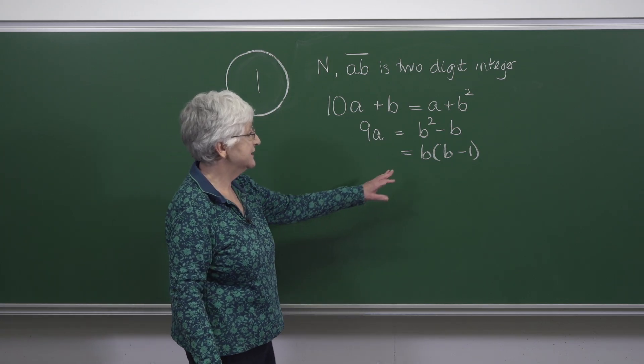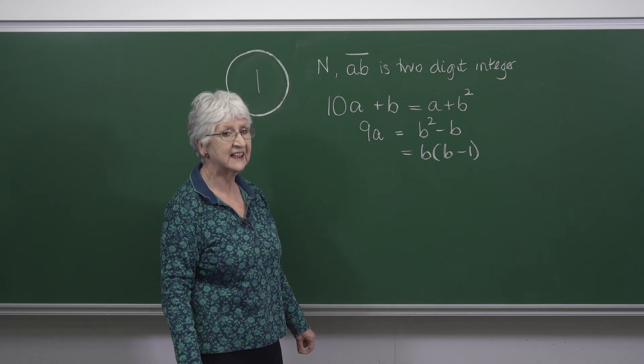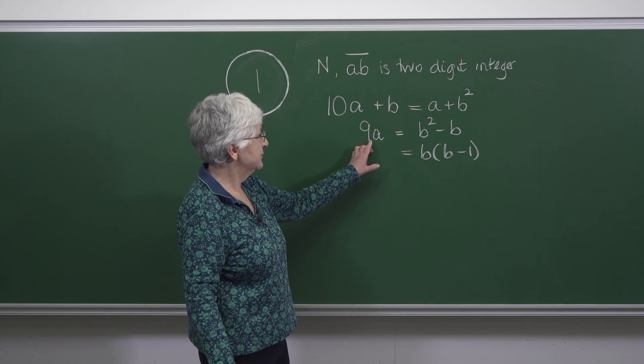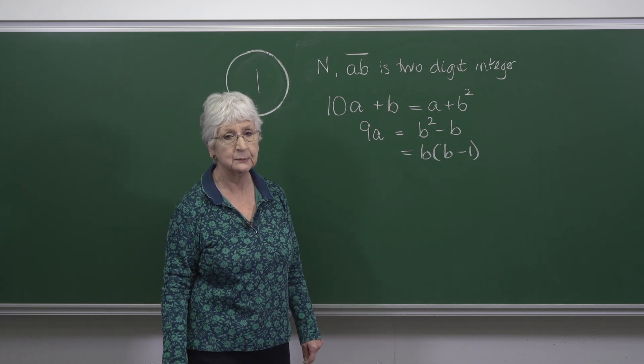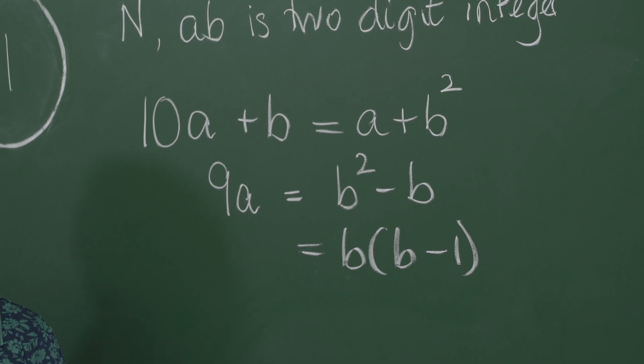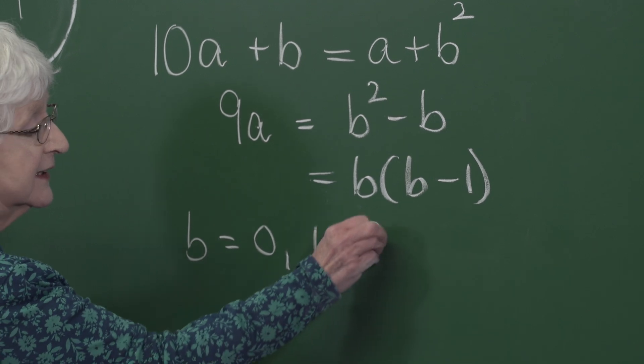Now we notice that B and B minus 1 are two consecutive integers. And we also notice that the left-hand side is divisible by 9. By inspection, the only possibilities for B are B equals 0, 1, or 9.